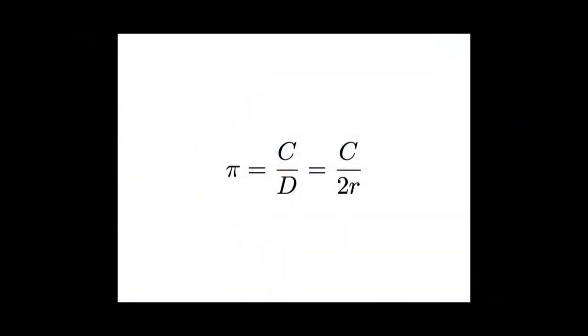This suggests that perhaps a more natural choice for the circle constant is c over r. If you look at what pi is, it's c over d equals c over 2r, and that factor of 2 haunts us throughout mathematics, science, and engineering.